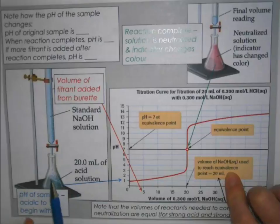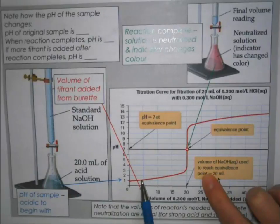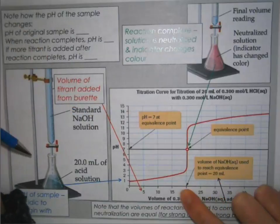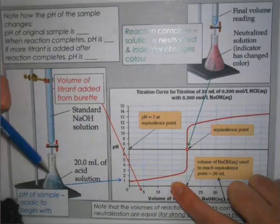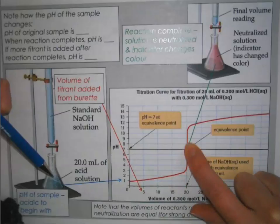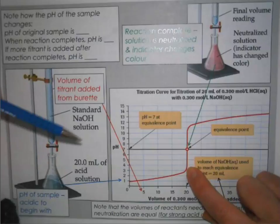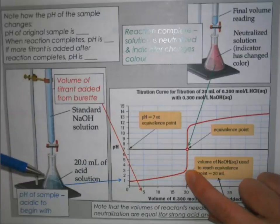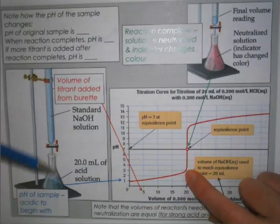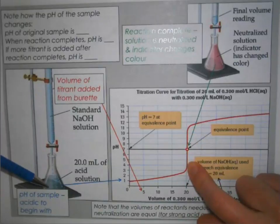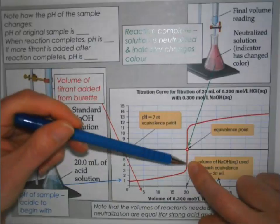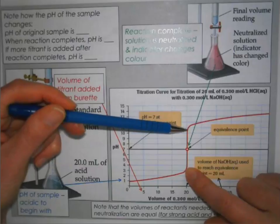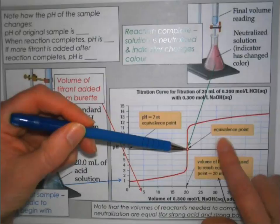As we add in the sodium hydroxide, which is a strong base, some of it is going to start to neutralize the hydrochloric acid, and we're going to start seeing the pH of the sample increasing. Once enough sodium hydroxide has been added to fully react with all the acid, the pH curve sharpens basically to a vertical component. Right in the middle of that vertical expanse is what we call the equivalence point.